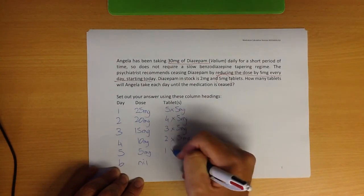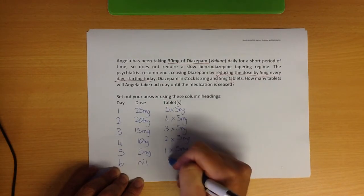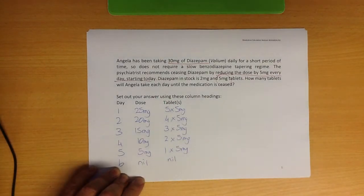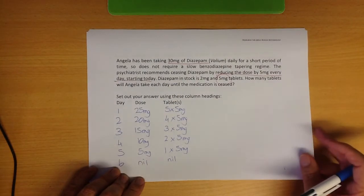That one should be fairly quick and easy for most people. I'd be surprised if you had trouble with the maths. Maybe misreading the question could be the problem.